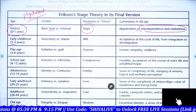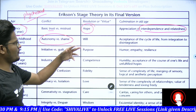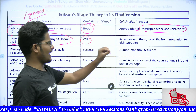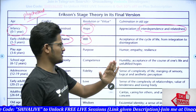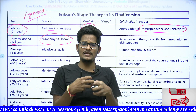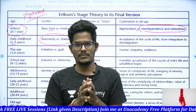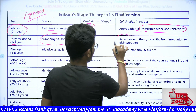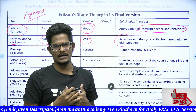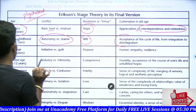From one to three years — early childhood — the conflict is autonomy versus shame. The virtue is will. The key idea is acceptance of the cycle of life, from integration to disintegration — connecting with many and disconnecting with many. Many people we integrate, like family members; many we disintegrate, like enemies. This is how we develop socially.